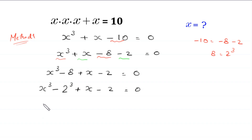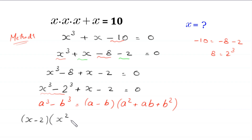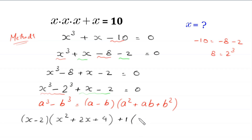Now, by using the algebraic identity a cubed minus b cubed is equal to a minus b times a squared plus ab plus b squared, this x cubed minus 2 cubed will become x minus 2 times x squared plus 2x plus 4. From these two terms plus x minus 2, we can factor out plus 1 as a common factor, and in bracket, left x minus 2 is equal to 0.